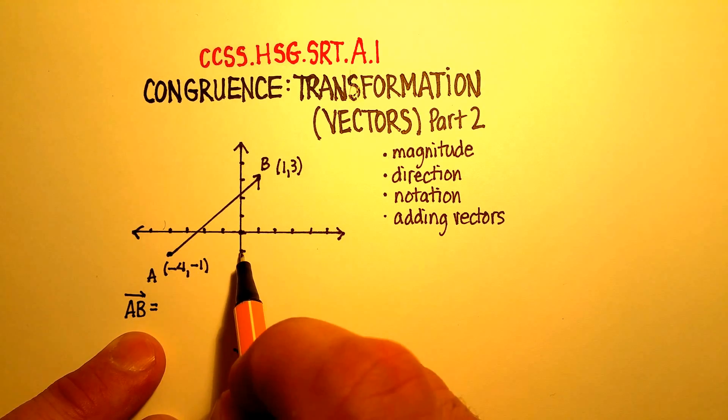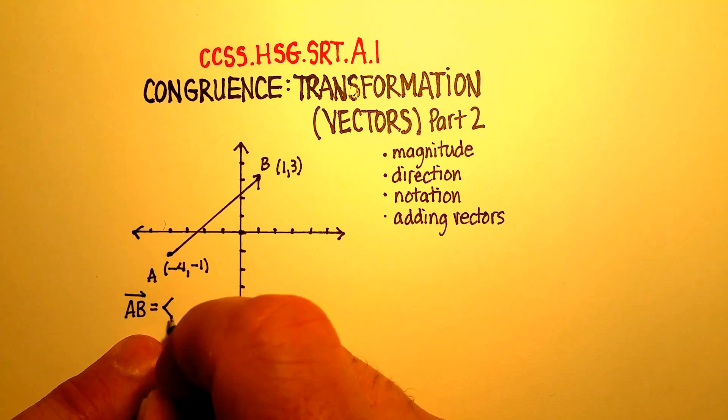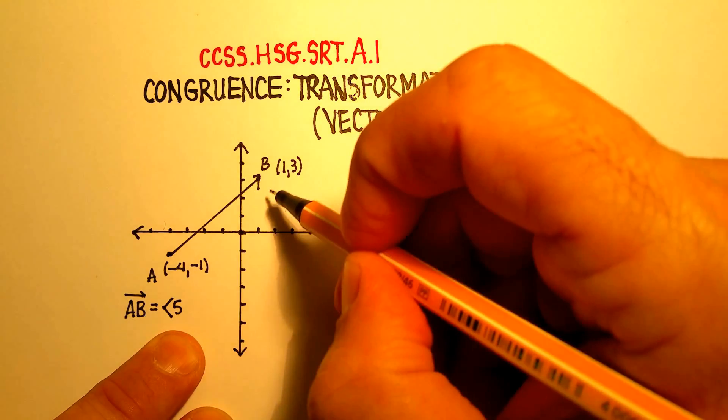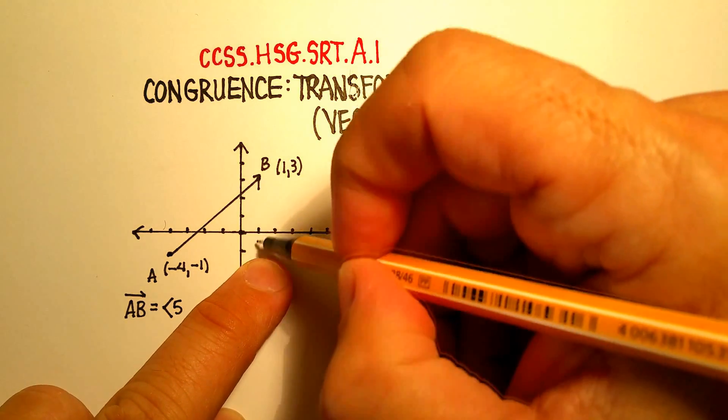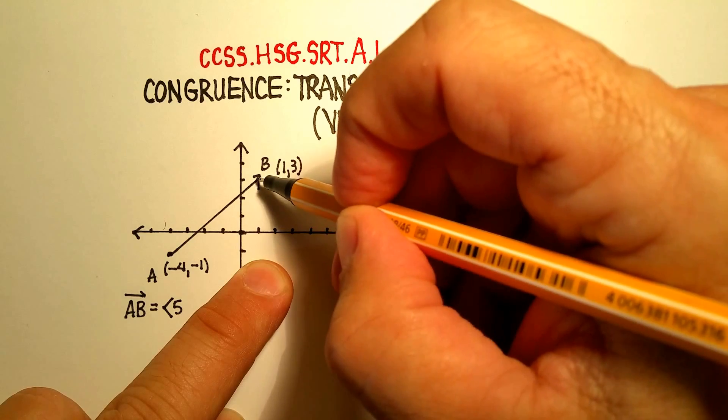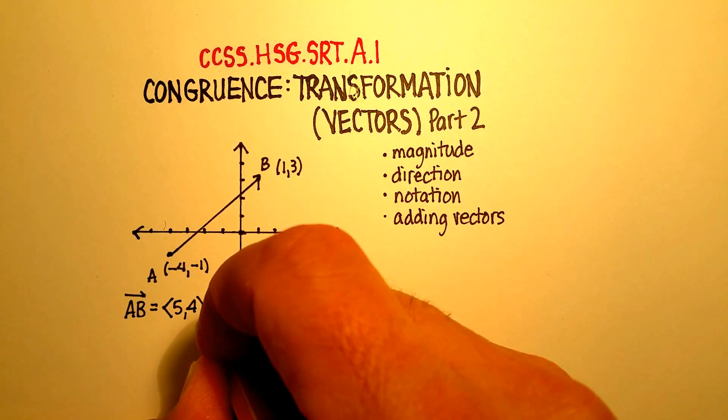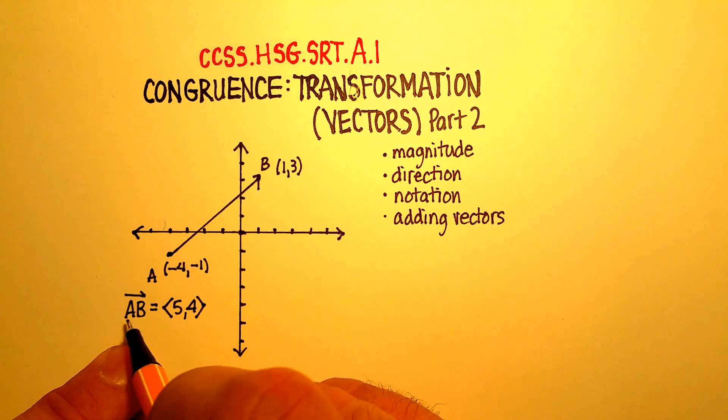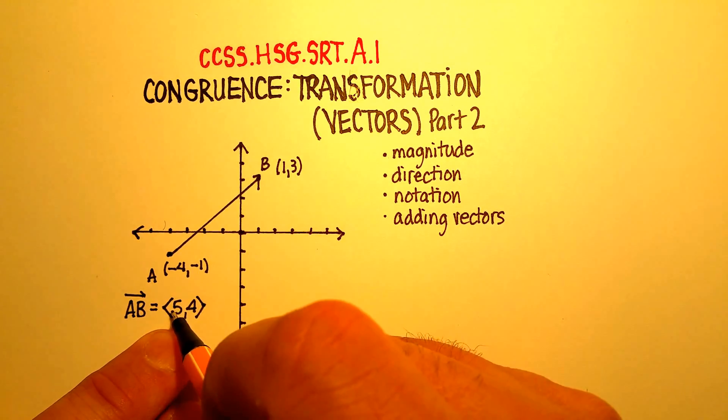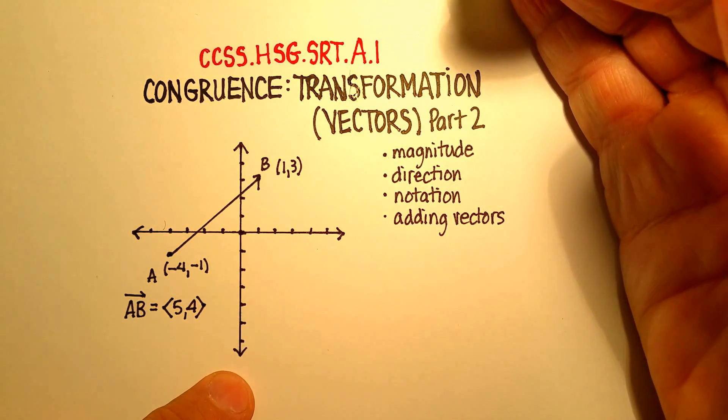In this particular vector we have a horizontal component of one, two, three, four looks like it's five. And remember how we did that. We drew this kind of a bracket. We said it was five in the positive direction. And then we went ahead and did the vertical component. And that was one, two, three, four. So this vector, vector AB could be indicated by this component form five, four, five along the horizontal four along the vertical.